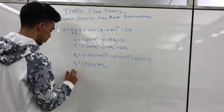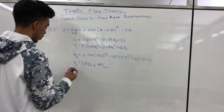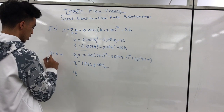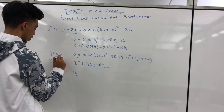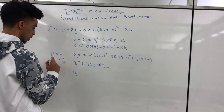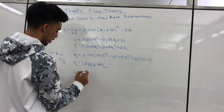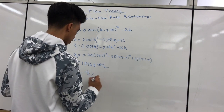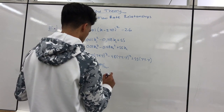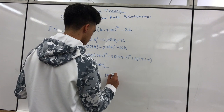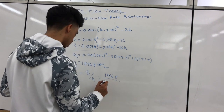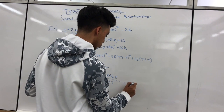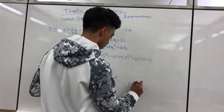We also solve for the speed at capacity. Using q equals k times u, rearranged as u equals q over k, the speed at capacity is q_c divided by k_c, which is 1846.8 over 74.7, giving us 24.7 miles per hour.